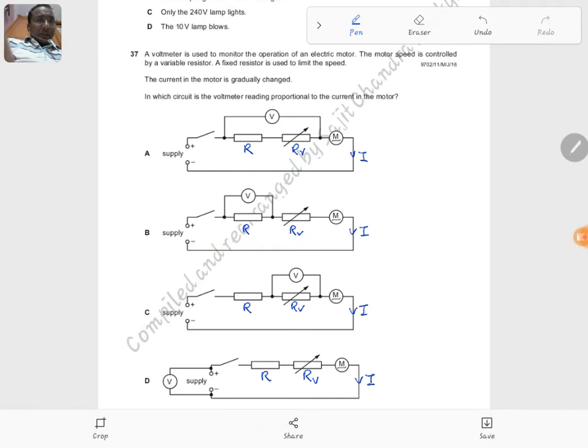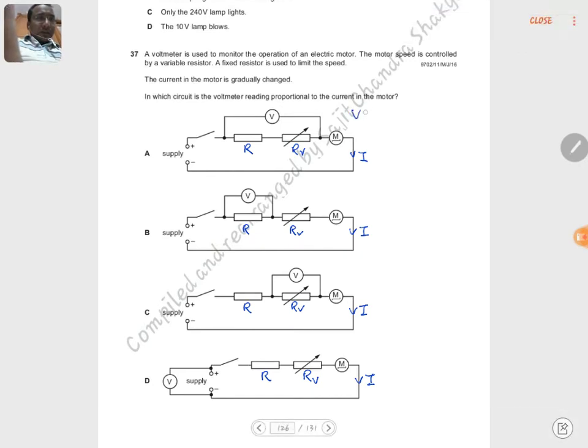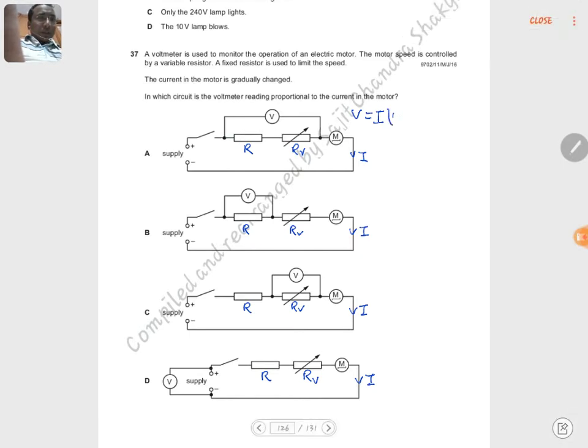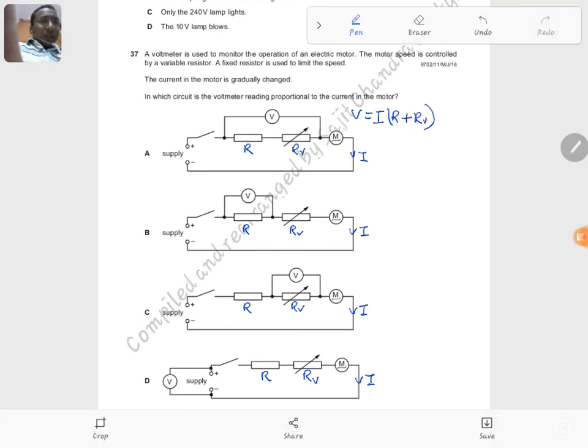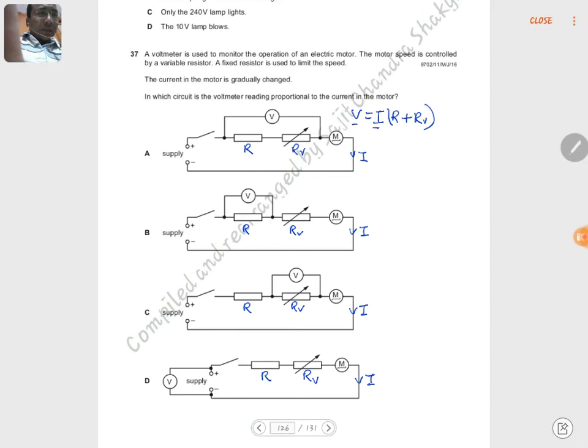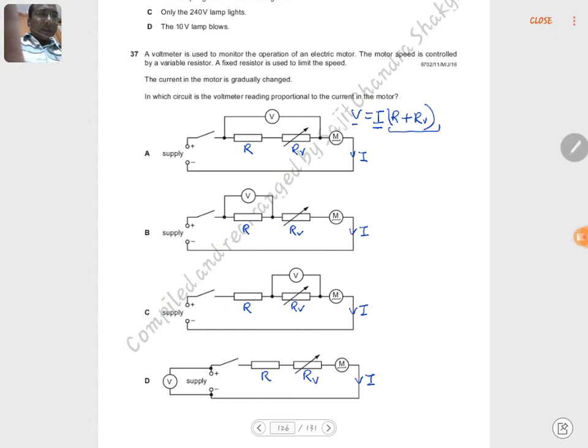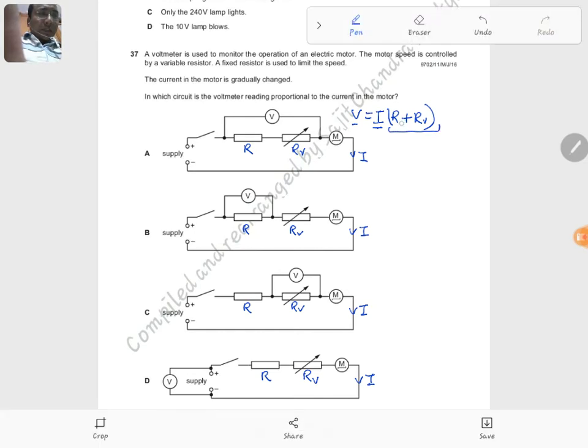In the first circuit, V will be equal to current times the resistance enclosed here, so it should be R plus RV. If we need V to be directly proportional to I, we must have R plus RV fixed. But the question says R is a fixed resistor while RV varies.